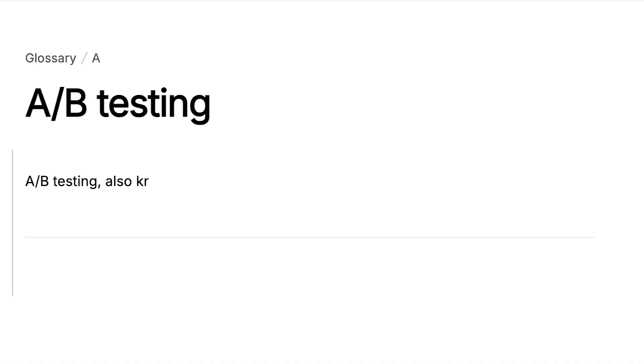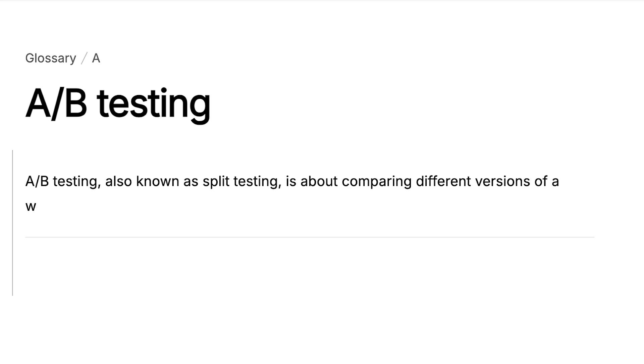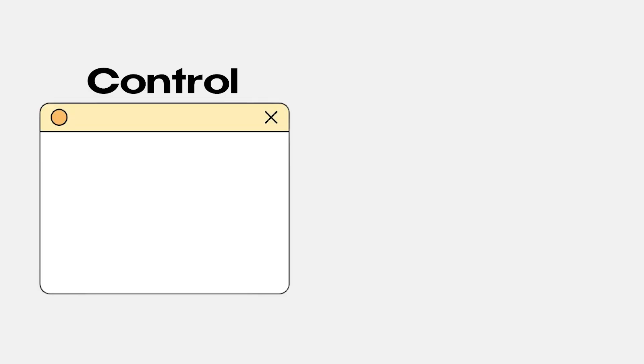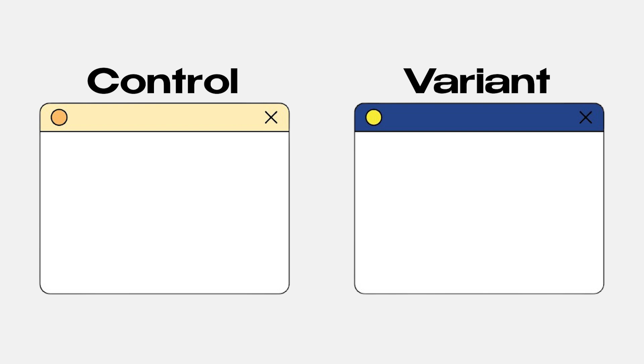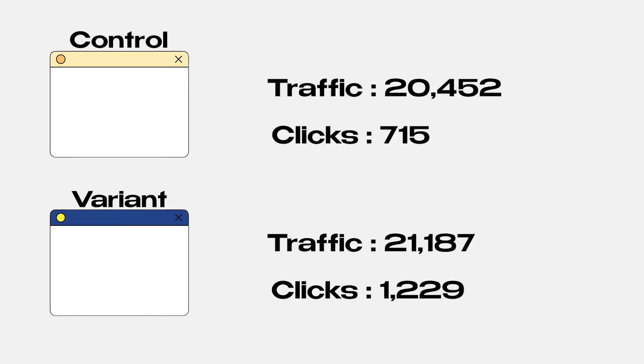A-B testing, also known as split testing, is about comparing different versions of a webpage to see which performs better. You create a control and a variation, then track which one leads to more clicks or conversions. It is not about guessing what works — it is about knowing. A-B testing helps make data-driven decisions that can directly impact your website's performance.